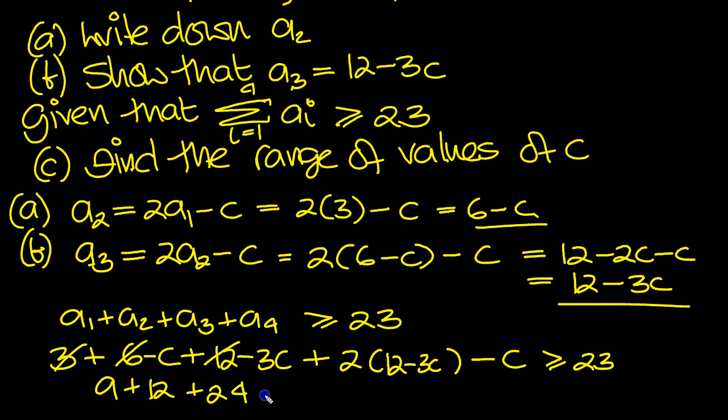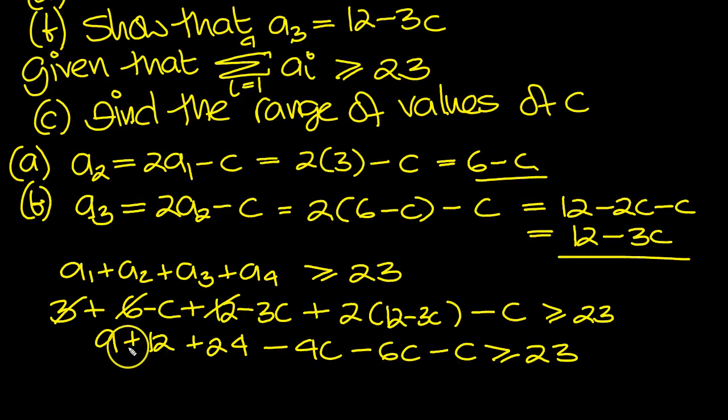minus 3c is minus 4c. Expand this bracket, it's minus 6c. And then there's a minus c here, is greater than or equal to 23. So let's see what we've got. We've got 9, 12,